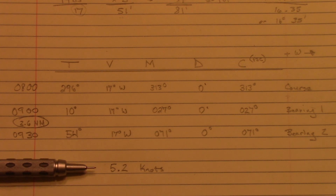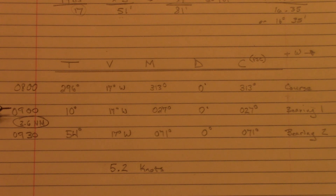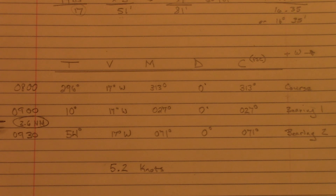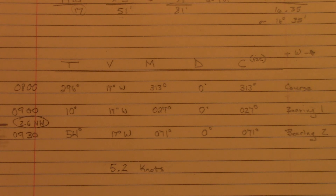Recall from the problem we're traveling at 5.2 knots. Bearing one was at 0900 and bearing two was at 0930 — that's only half an hour. So we divide: half of 5.2 is 2.6. We should have traveled 2.6 nautical miles between the time we took our first bearing at 0900 and the second bearing at 0930.